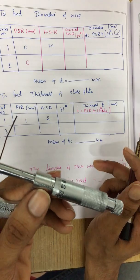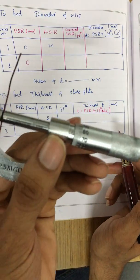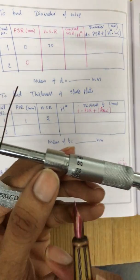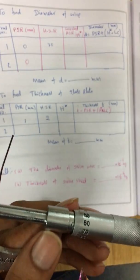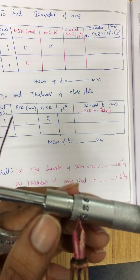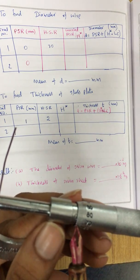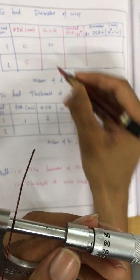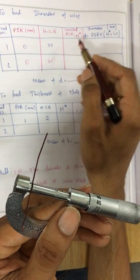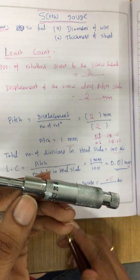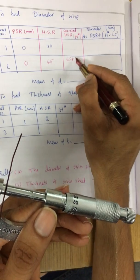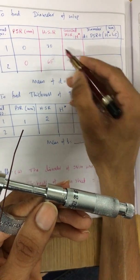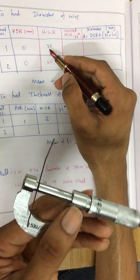Coming to the HSR — head scale division has no unit, it is just a division number. The reading is between 60 and 70; the direct reading is 65. So I write 65 for HSR. Now corrected HSR = HSR + zero correction = 65 + 5 = 70.